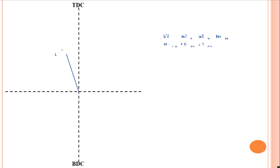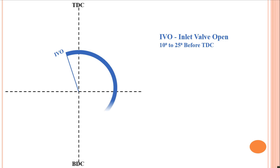The inlet valve opens a few degrees before the piston reaches TDC during the exhaust stroke. This is necessary to ensure that the valve is fully open and fresh atmospheric air enters the cylinder as soon as the piston starts to move down.